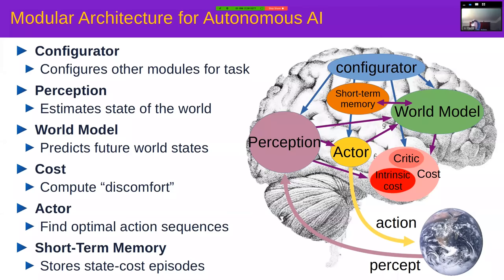There is also an actor module whose role is to figure out what sequence of actions can be taken so that, according to the world model's predictions and the cost function, the cost is minimized. Think of this as model predictive control. There's also a short-term memory and, on top of everything, a mysterious module called a configurator, which takes input from every other module and configures all of them for the particular task at hand.